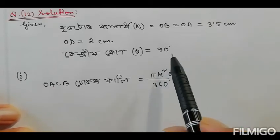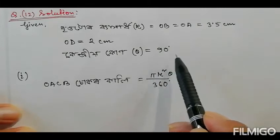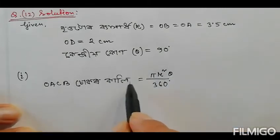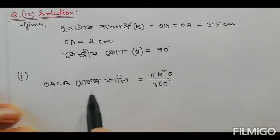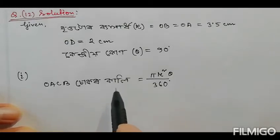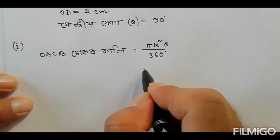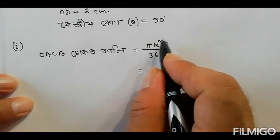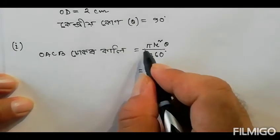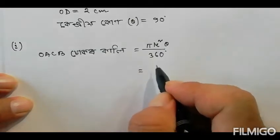So we know that the area of a sector is theta by 360 into pi r squared. Whether we consider theta, the formula would be theta by 360 into pi r squared, and here theta by 360 gives us 90 by 360, and pi is 22 by 7.